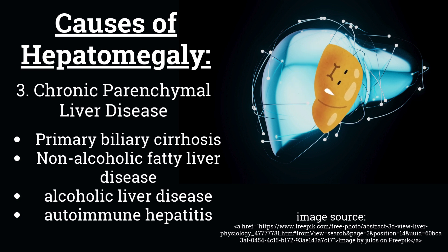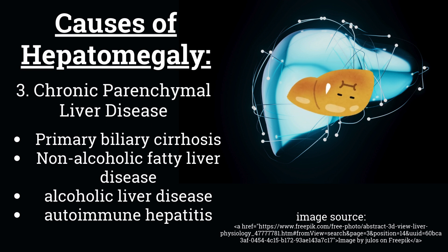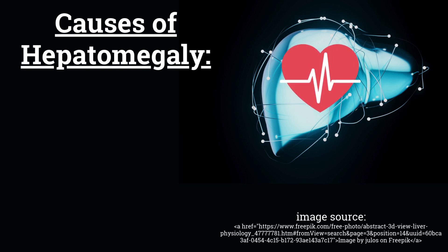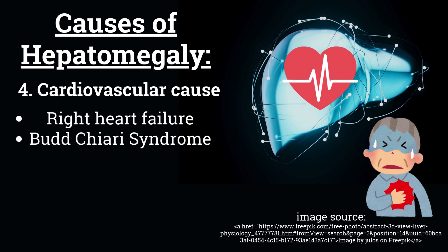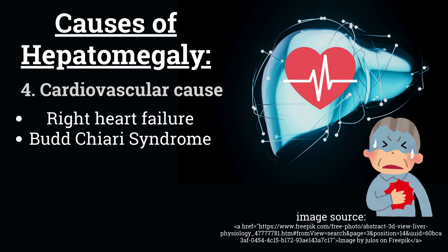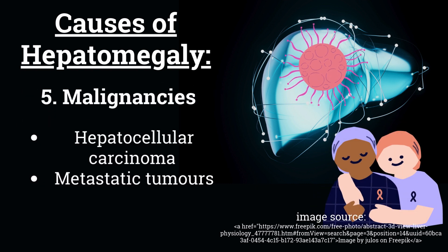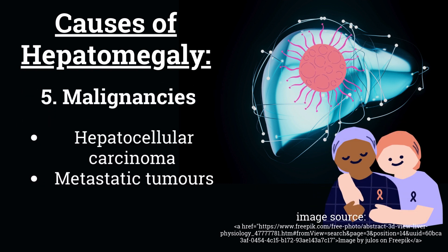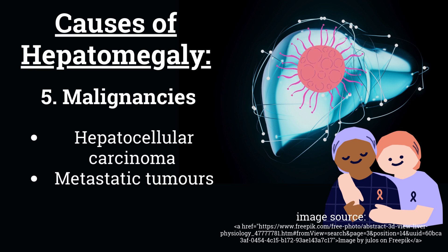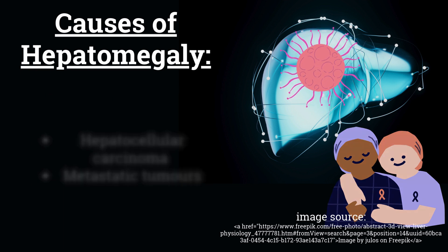Number three — chronic liver disease — includes primary biliary cirrhosis, non-alcoholic fatty liver disease, alcoholic liver disease, and autoimmune hepatitis. Number four — cardiovascular causes — for example right heart failure and Budd-Chiari syndrome. Number five — malignancies — primary malignancy like hepatocellular carcinoma and secondary malignancies like metastatic tumors.